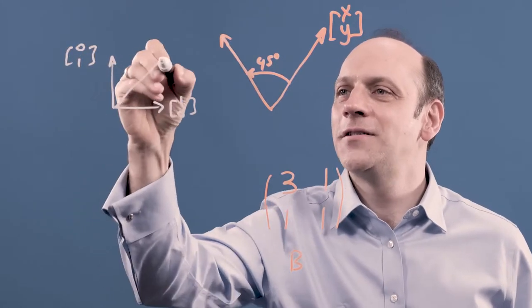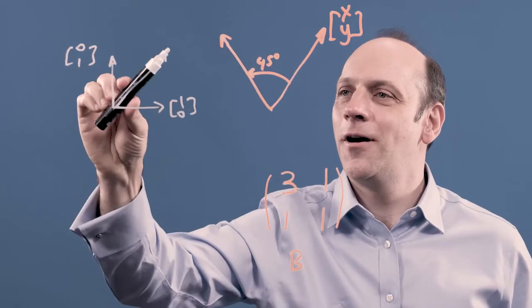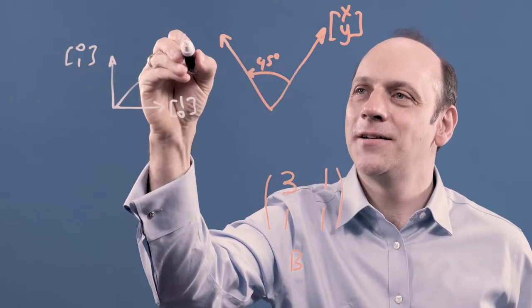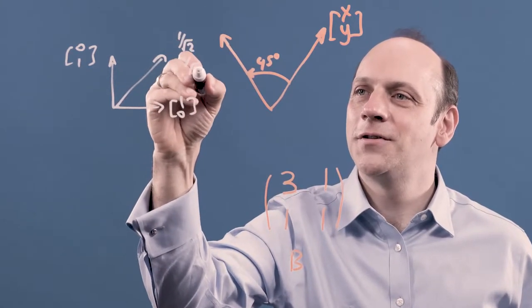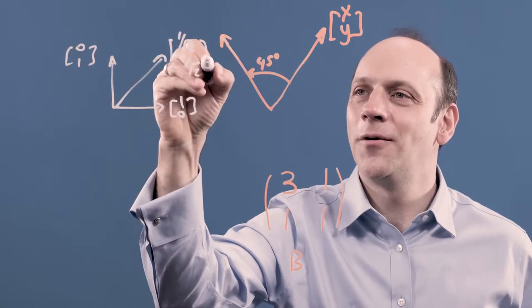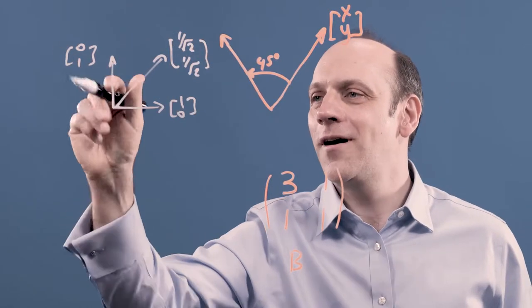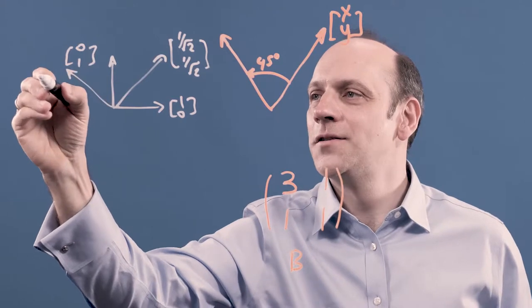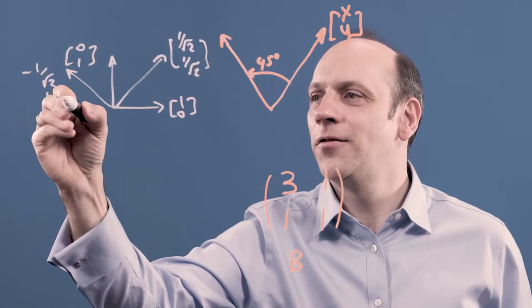a 45 degree rotation rotates [1 0 0] up like that. So it becomes, if it's still a unit vector, 1 over root 2, 1 over root 2. That is a normalized [1, 1]. And it takes [0, 1] round to minus 1 over root 2, 1 over root 2.